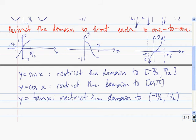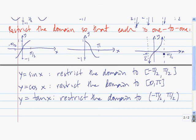Remember that the domain and the range switch between the function and the inverse function. Negative pi over 2 to pi over 2 is the domain of sine of x, so it becomes the range of the inverse. Negative 1 to 1 is the range of sine, so it becomes the domain of the inverse. Zero to pi is the domain of cosine, so it becomes the range of the inverse cosine. Negative 1 to 1 is the range of cosine, so it becomes the domain of the inverse. Negative pi over 2 to pi over 2, exclusive of the endpoints, is the domain of tangent, so it becomes the range of the inverse tangent. Negative infinity to infinity is the range of the tangent, so it becomes the domain of the inverse tangent.